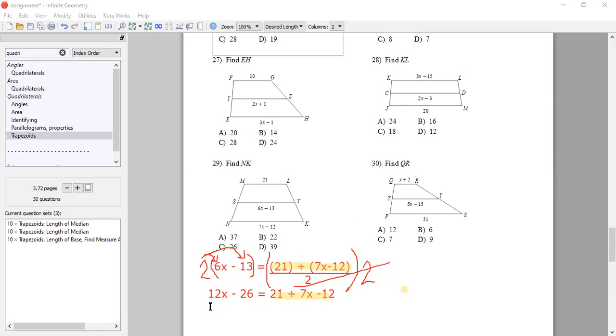So we're going to combine like terms on the right-hand side of the equation first. So 12x minus 26 equals 21 minus 12 is a 9, plus 7x. We're going to subtract 7x from both sides. And then when we get that done, we have a 5x minus 26 equals 9. Because we subtracted 7x from both sides. Now we're going to add 26 to both sides. And so 5x equals 35. Divide both sides by 5. X equals 7.